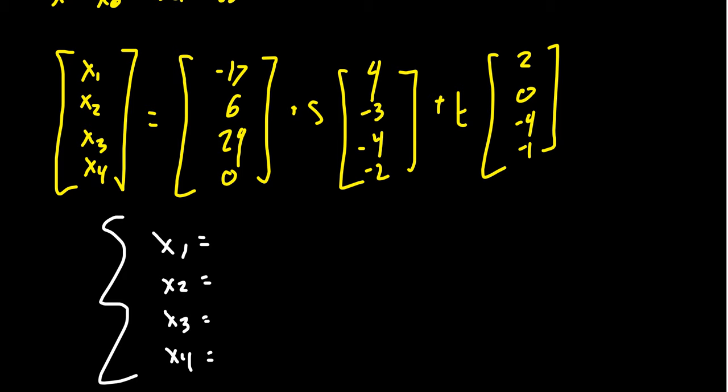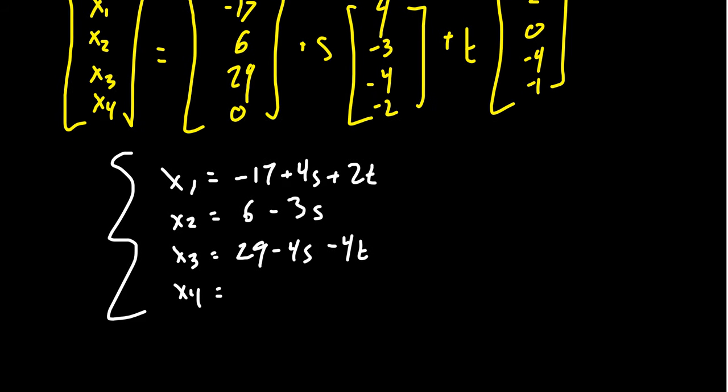We'll then be dependent on the free variables, s and t. Because x₁ is equal to -17 + 4s + 2t. x₂ is equal to, x₂ is going to equal 6 - 3s plus 0t. So that disappears. x₃ is going to equal 29 - 4s - 4t. And then lastly, x₄ is going to equal 0. We don't need to include that. -2s - t, like so. And so this gives us the parametric equations for this plane.